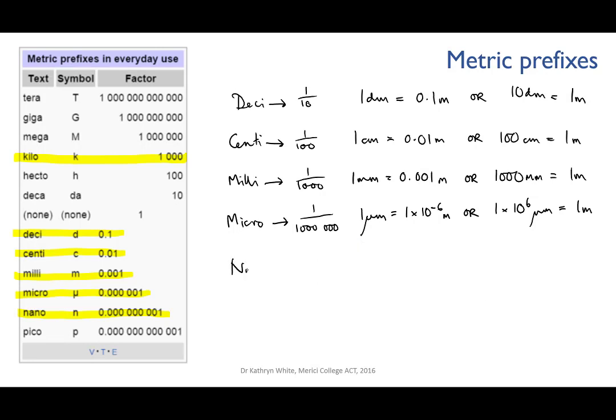And finally, nano means one billionth. So a nanometre is one times ten to the minus nine metres. Or we can say that there are one times ten to the nine nanometres in a metre.